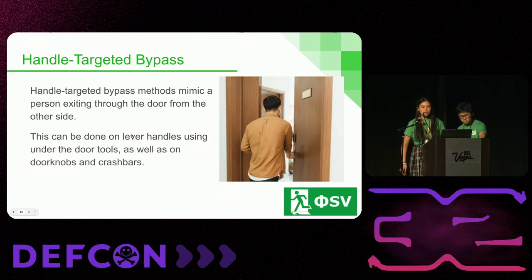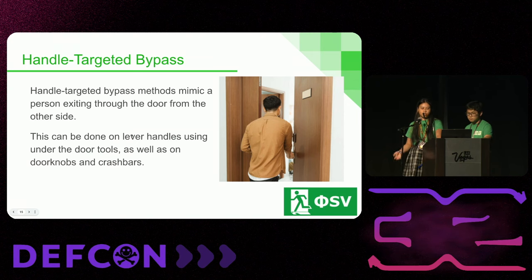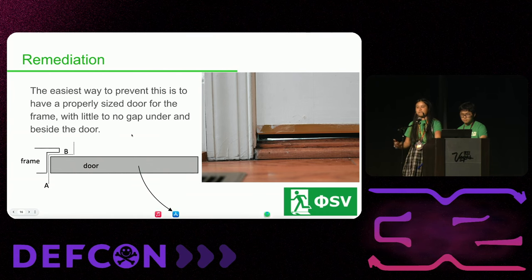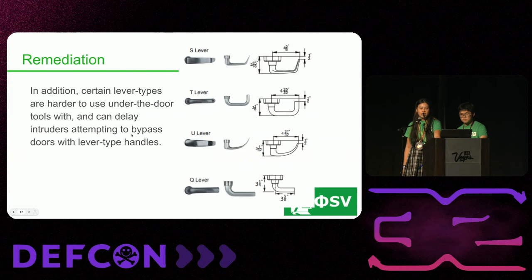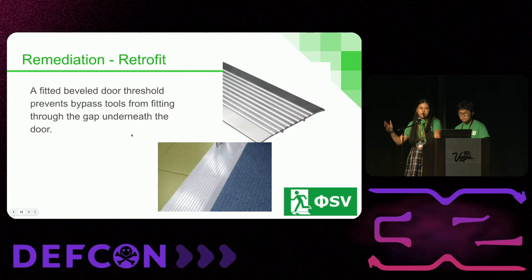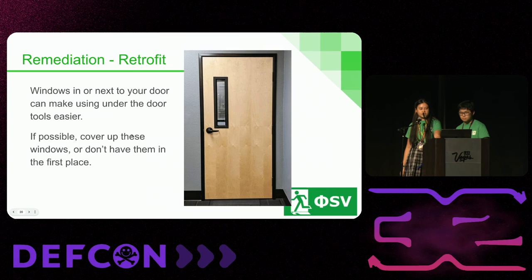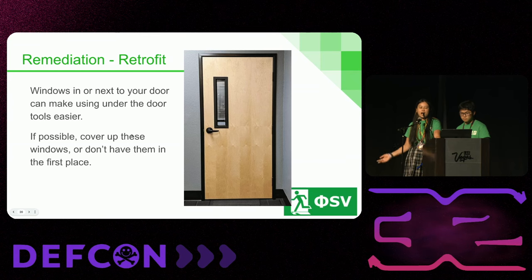Next I'm going to talk about handle targeted bypass. This usually mimics a person on the other side of the door exiting, and can be used on lever handles, doorknobs, and crash bars. The easiest way to prevent this is to have a properly sized door that fits into the door frame and doesn't leave a gap large enough for tools to fit in, around, or under. Certain types of lever handles will make it more difficult to use the under-the-door tool. A door bottom retrofit can help reduce the gap underneath your door. Weatherproofing strips can also make using those kinds of tools more difficult. Windows next to your door can make it easier to use these tools, so cover them up or avoid them if not necessary.